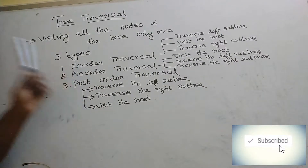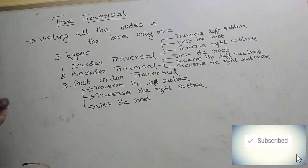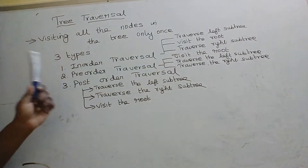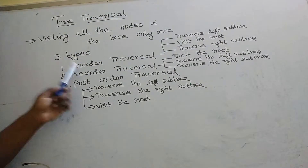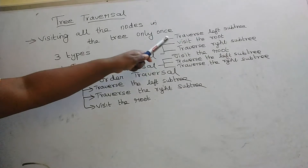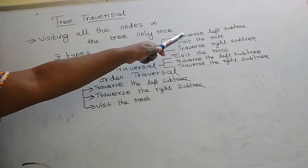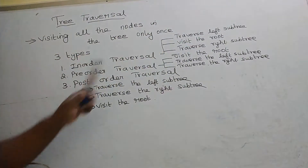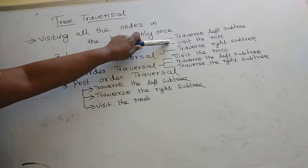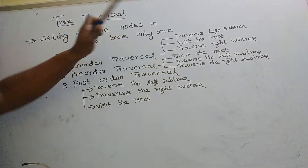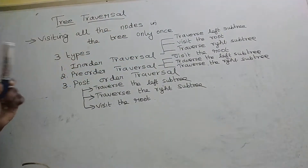The first one is inorder traversal. There are three steps to follow in inorder traversal. First, traverse the left subtree in inorder. Second, visit the root. Third, traverse the right subtree in inorder.